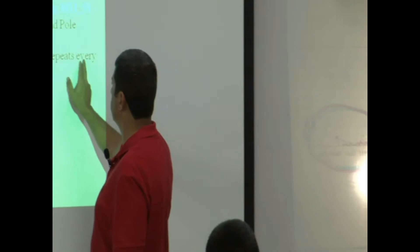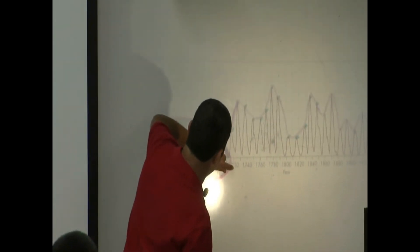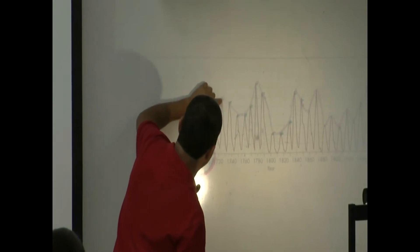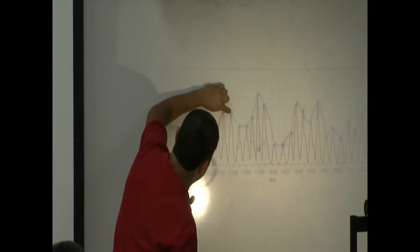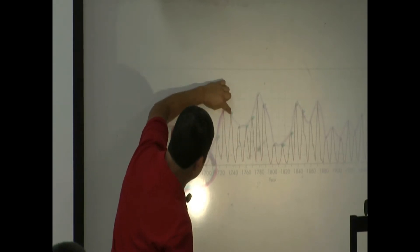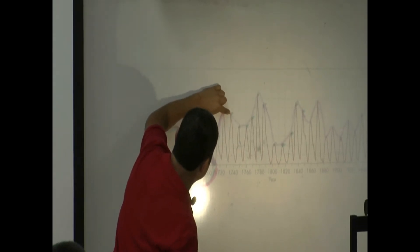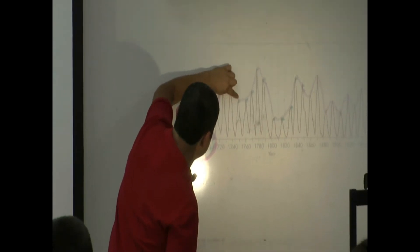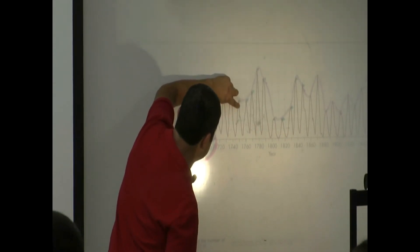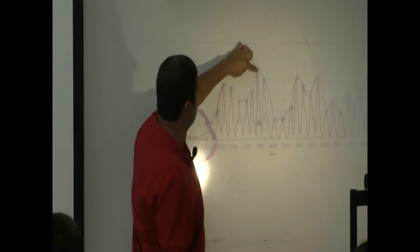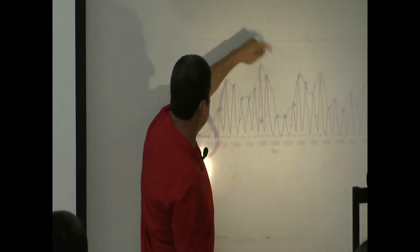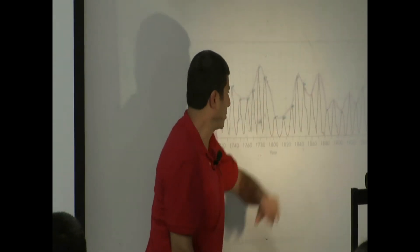For example, if this is 1728, then this one here is about 1739, and then this one is about 1750. You see? And then the next one is 1761, 1772, 1883, and then so on and so on.